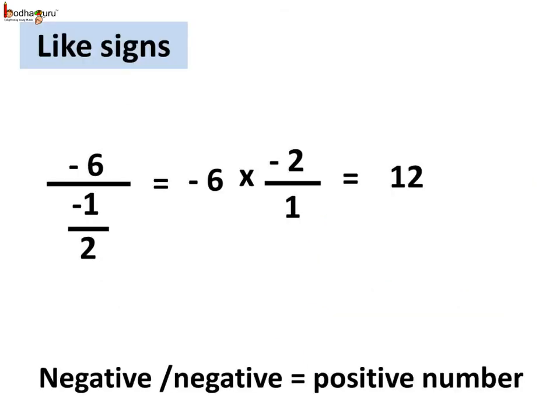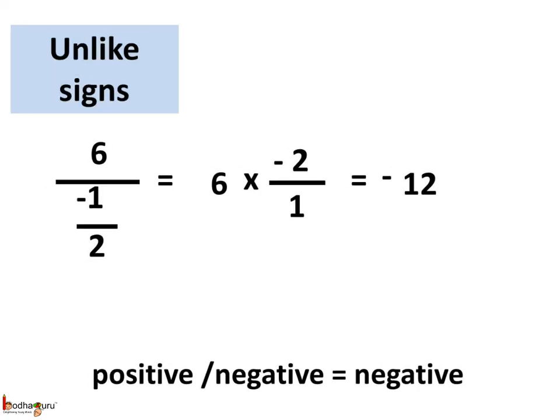Thus, when we are performing division of rational numbers, it is the same as multiplying by the reciprocal of the divisor. The product of rational numbers with like or same signs would be a positive rational number. So if we divide by a number with the same sign, we get a positive number as the answer.